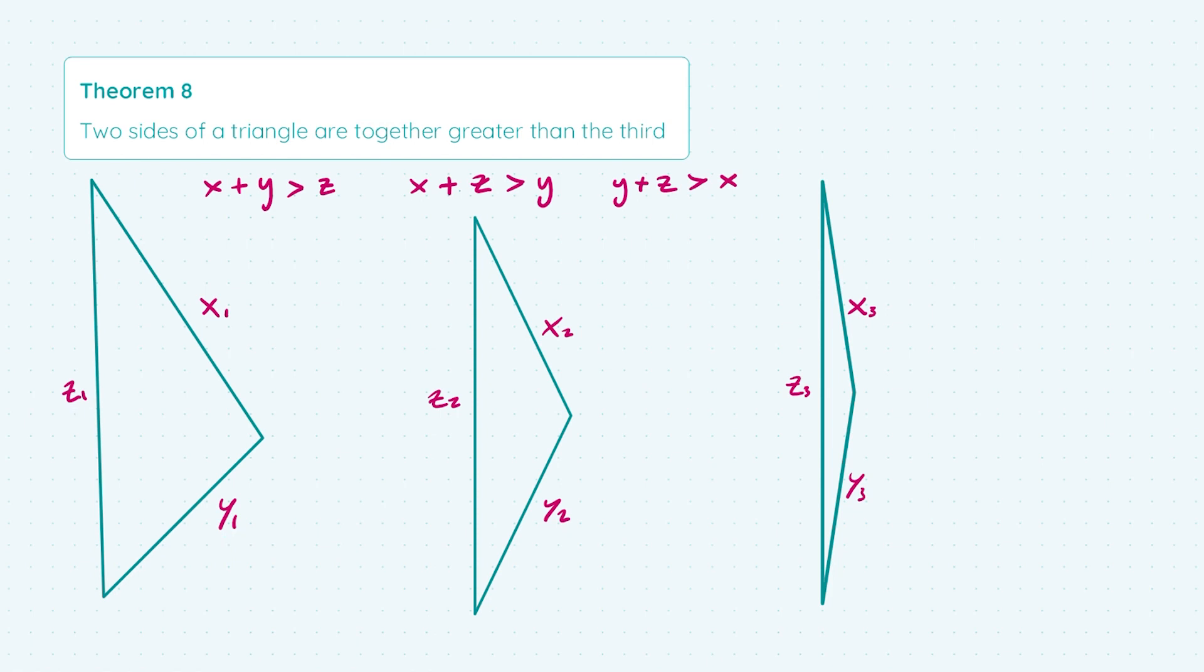And in the second case, x2 plus y2 is still greater than z2 but not by quite as much. And the value of x3 plus y3 is actually really close to the value of z3.